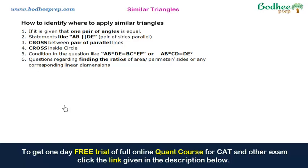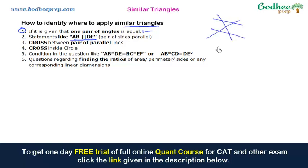Let's summarize how to identify when to apply similar triangles. First: if one pair of angles is equal, there is likely a common angle in both triangles, establishing similarity. Second: if two lines are stated to be parallel, with a cross between them, the two triangles formed are similar. Third and fourth: a cross between two parallel lines or a cross inside a circle both yield pairs of similar triangles.